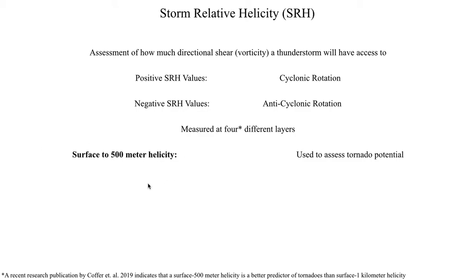The first thing we're going to look at is surface to 500 meter helicity. Some of you may have seen calculations for surface to one kilometer or surface to three kilometer helicity, but there's now a new parameterization — surface to 500 meter helicity — which is being used to primarily assess the potential for tornadoes. This research publication suggests we should really be using surface to 500 meter helicity to assess tornado potential.